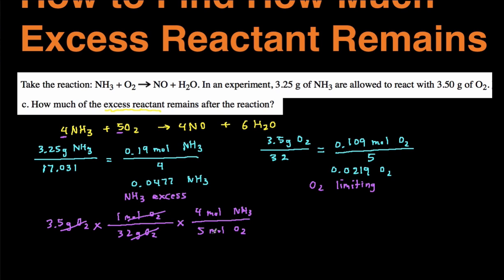Then the moles of O2 cancel each other out. Then I convert it back into grams of NH3 by multiplying by molar mass, which is 17.031 grams of NH3 over 1 mole of NH3. Doing that, I'm left with grams of NH3, which is going to be 1.49 grams of NH3.